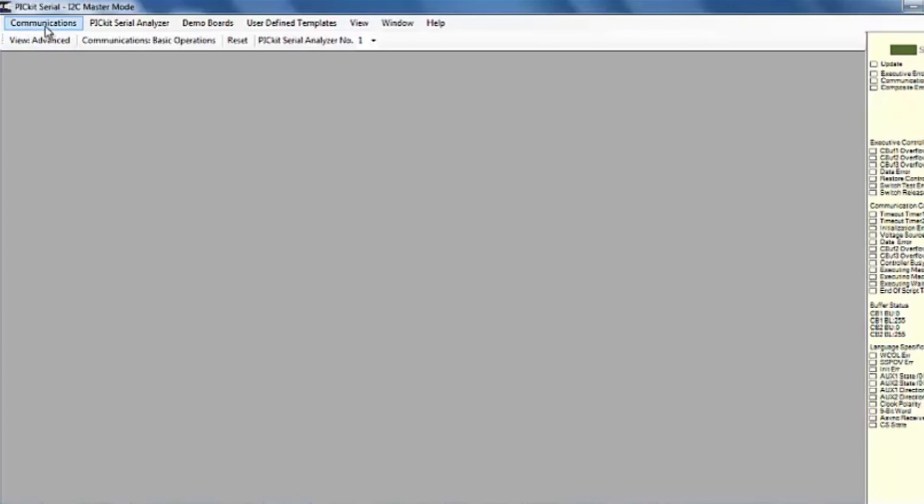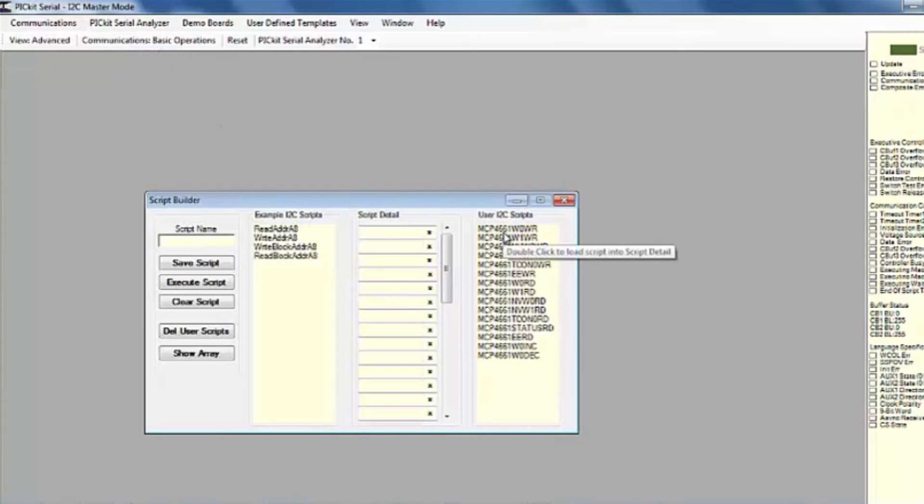Open the script builder window. Double click on the MCP4661W0WR script in the example I2CM script column. This loads the script detail column. Click on the execute script button. This executes the script shown in the script detail column which will update the wiper value to 7F hex.